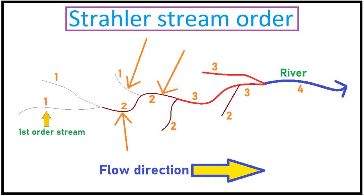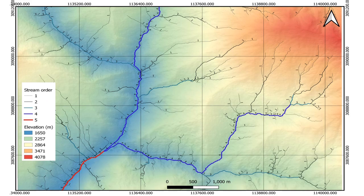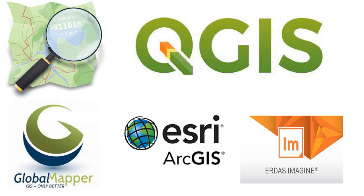Stream order maps are widely used in hydrology and geomorphology for a variety of investigation purposes. It can be created using a variety of GIS softwares. QGIS is one of them.